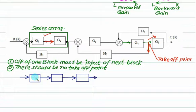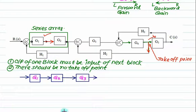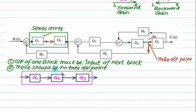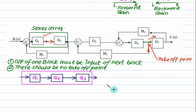Let us call this block G1, this one G2, and this one G3. The rule is applicable for any number of blocks. The output of G1 must be the input of G2, and the output of G2 must be the input of G3. Then the entire arrangement is called a series arrangement. Rule number 2 is also strictly followed: there is no takeoff point. For any number of blocks, rule number 1 and rule number 2 must both be satisfied — only then is it called series.